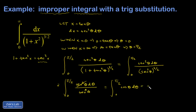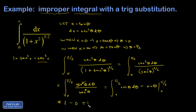Now we can easily guess the antiderivative: it's sine theta. Evaluating from 0 to pi over 2, the sine of pi over 2 is 1 and the sine of 0 is 0, so this comes out to a really nice answer of 1.